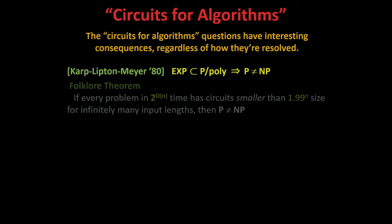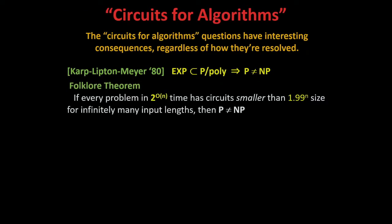There's a stronger folklore theorem — possibly due to Valentin — stating that if every problem in 2^{O(n)} time has circuits smaller than 1.99^n for infinitely many input lengths, then P is different from NP. You can construct functions not in 2^{O(n)} time deterministically, but if you add quantifiers working in Σ_3^{O(n)} time, you can construct functions that do not have circuits smaller than this.